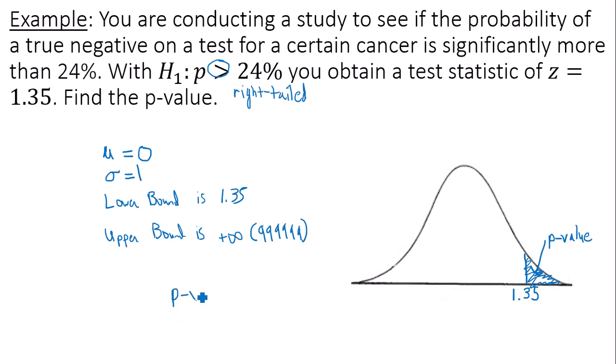So p-value is equal to 0.0885 in this case. That is the area of that tail. This is a right-tailed test, so the tail is located on the right-hand side. That's how you calculate a p-value specifically for a right-tailed test. Thanks for watching.